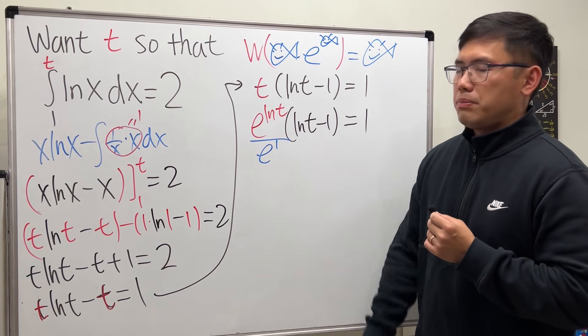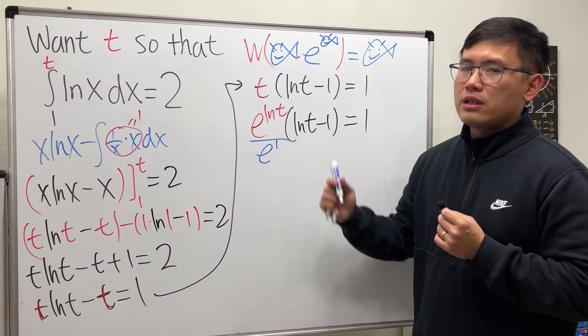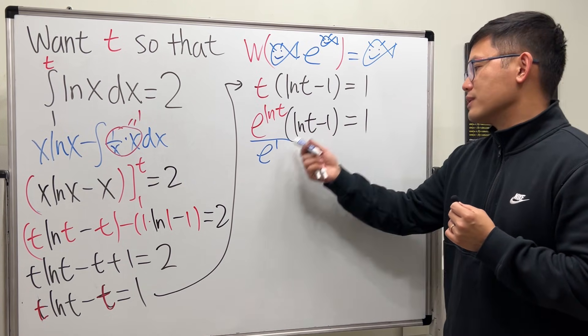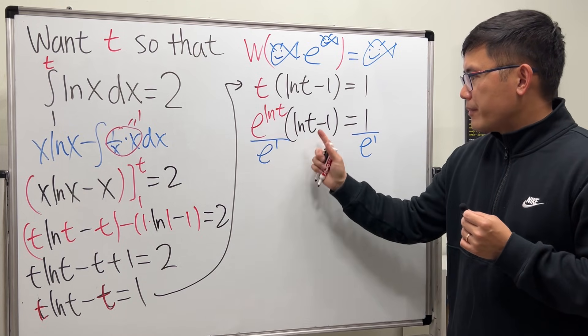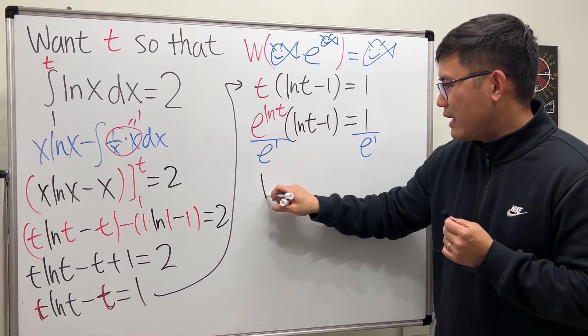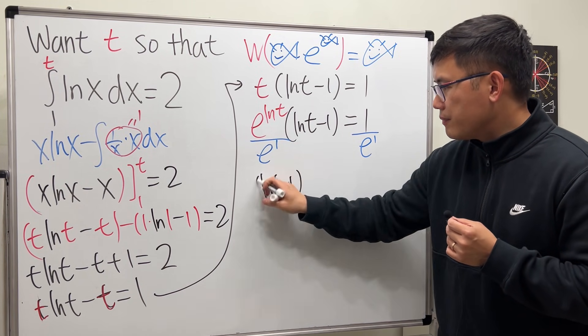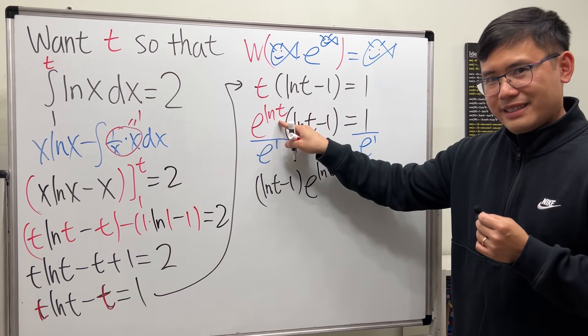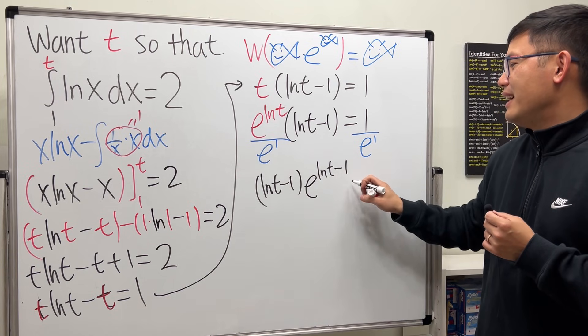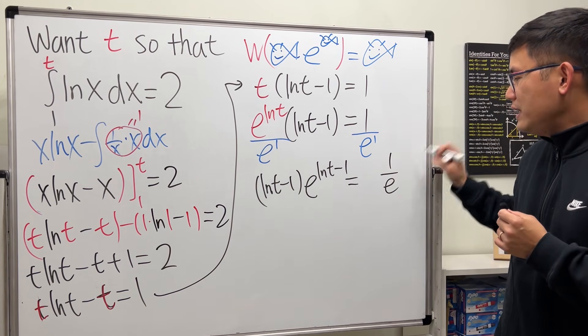So now put this to the front, we have ln(t) minus 1, this part is e, and then we have ln(t) minus 1. Aha! And that's equal to 1 over e. Ladies and gentlemen, this is the fish and we have the same fish right here.